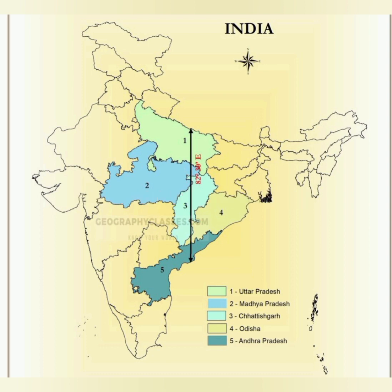The fourth question is: what is the Indian Standard Time meridian and where does it pass through? The standard time meridian is at 82 and a half degrees East. It passes through Naini, Allahabad in Uttar Pradesh, and also across Jagdalpur in Chhattisgarh. Indian Standard Time is five hours and thirty minutes ahead of Greenwich Mean Time.